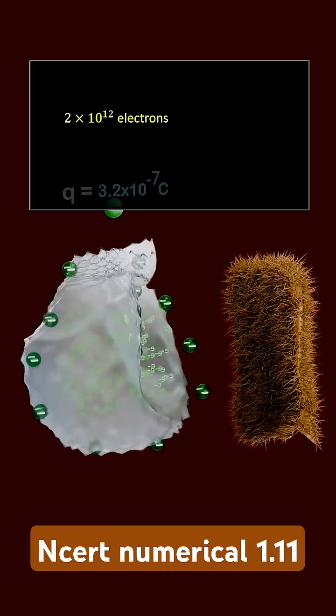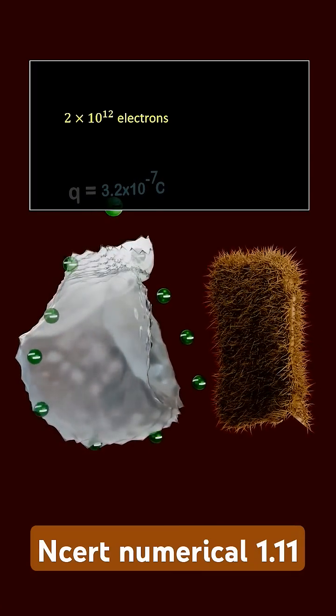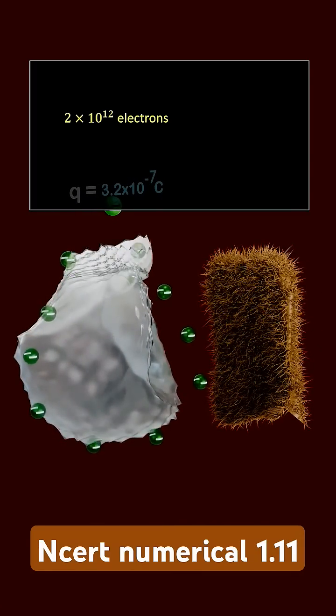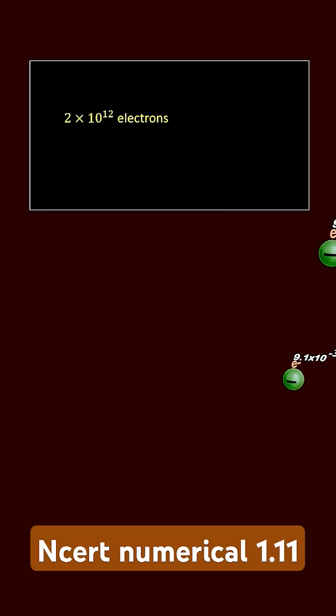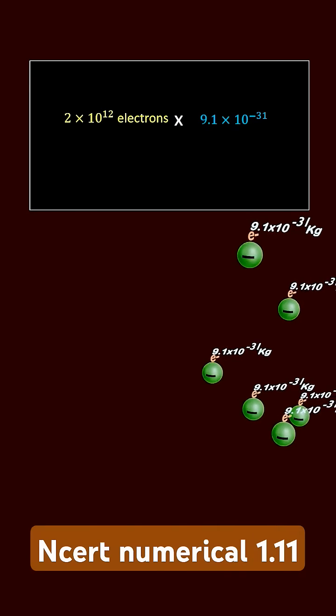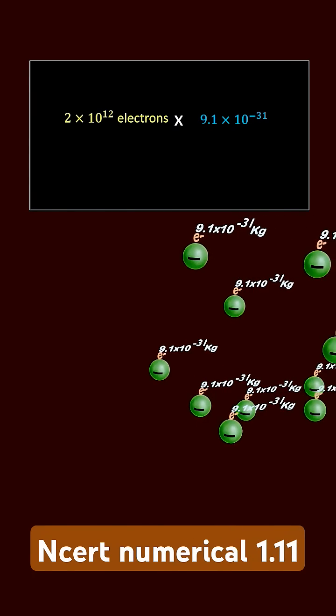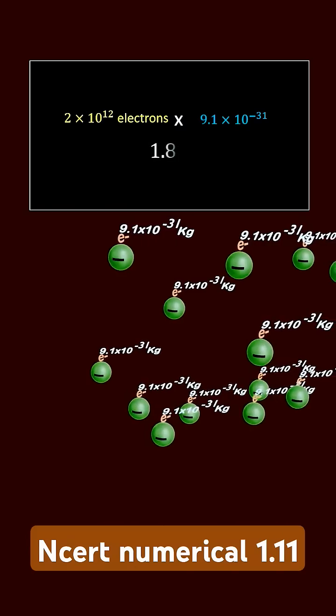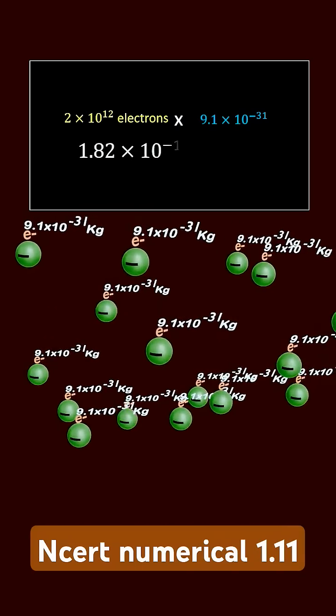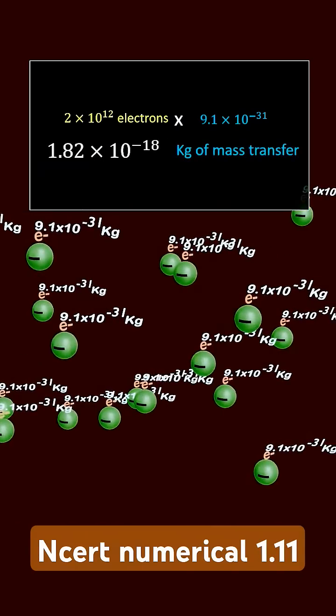Now, what about mass transfer? Since electrons have mass, rubbing also transfers a tiny amount of mass. The total mass transferred is simply the mass of one electron multiplied by the total electrons transferred. We get 1.82 into 10 to the power minus 18 kilogram of mass transferred.